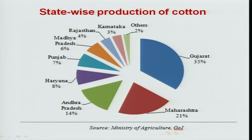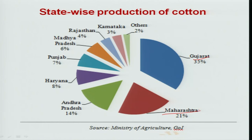In India, the major cotton growing states are Gujarat and Maharashtra, which occupy more than 50% of the area. Other important cotton growing states are Andhra Pradesh, Haryana, Punjab, Madhya Pradesh, Rajasthan, and Karnataka.